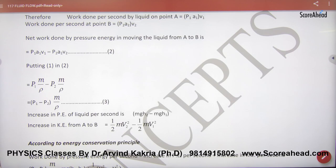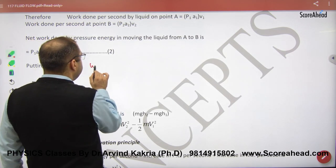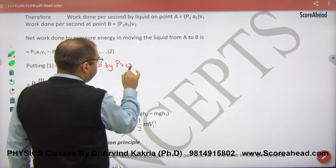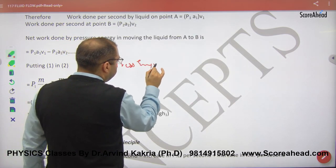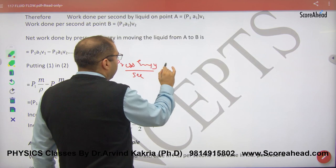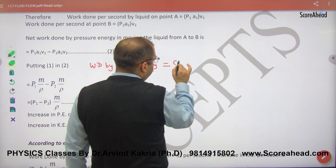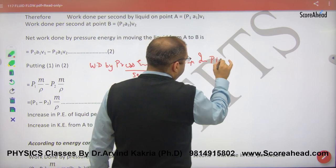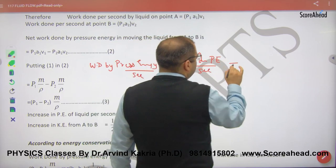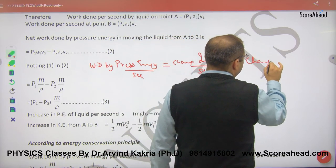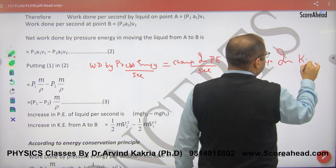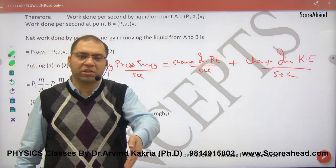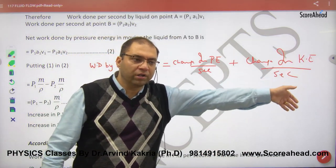I am going to put energy conservation. Now I am writing a statement. Work done by pressure energy per second is equal to change in potential energy per second plus change in kinetic energy per second. Pressure energy per second which has worked, change which has come in kinetic and potential.